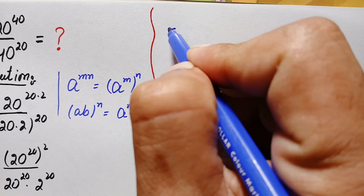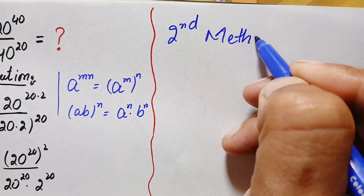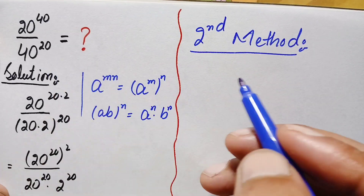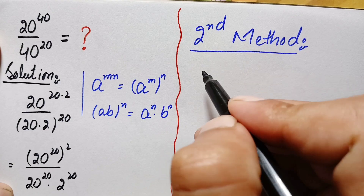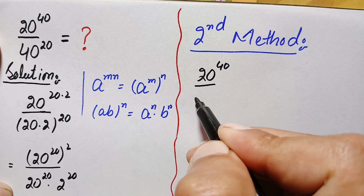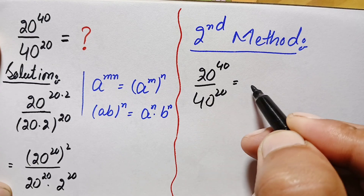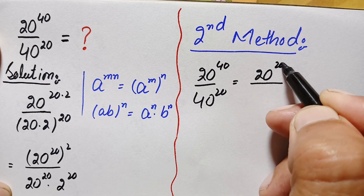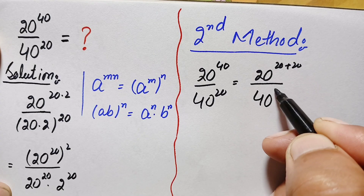For the second method, we write the problem again: 20 raised to power 40 divided by 40 raised to power 20. We rewrite the numerator by expressing the exponent 40 as 20 plus 20, giving us 20 raised to power (20 plus 20), divided by 40 raised to power 20.